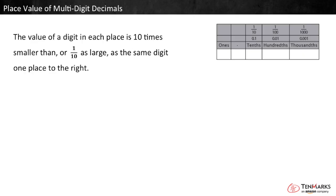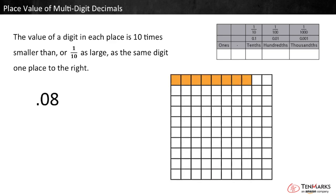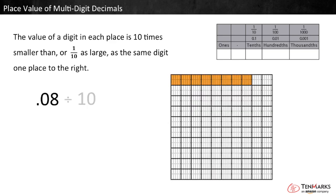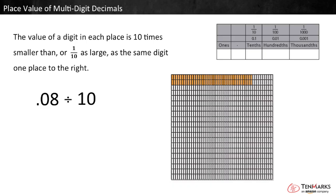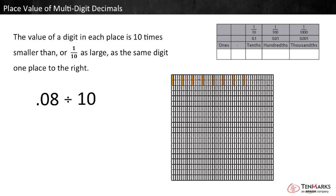Another way to say this is that the value of a digit in each place is ten times smaller than, or one tenth as large as, the same digit one place to the right. For example, look at eight hundredths again. If each of the eight hundredths is divided by ten, the result is eight thousandths. So eight thousandths is ten times smaller than eight hundredths, or it is one tenth as large.